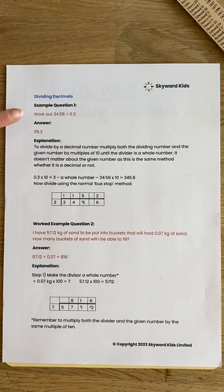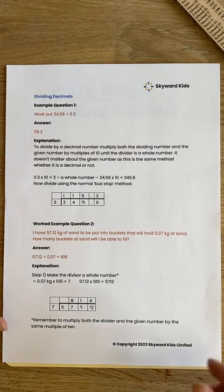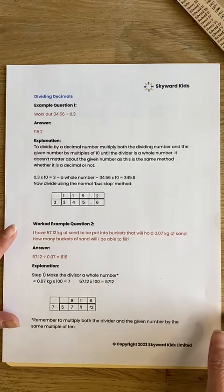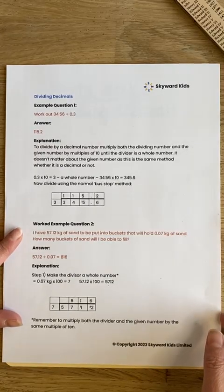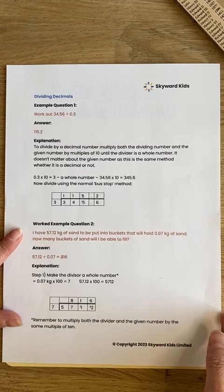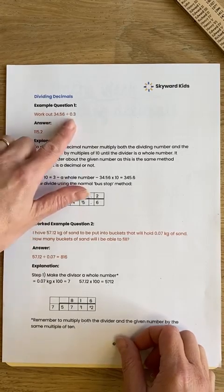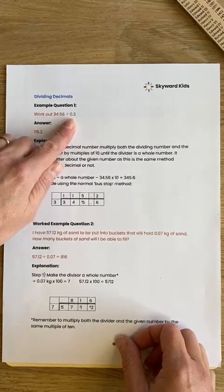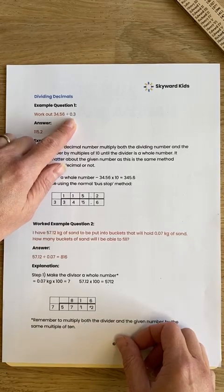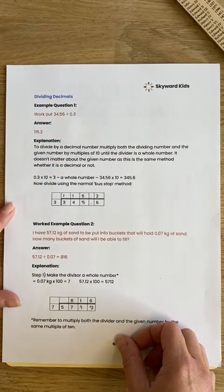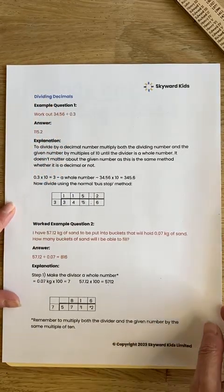It says, work out 34.56 divided by 0.3. We're going to use the bus stop method that we've covered in a previous video, but first of all, we have a slight problem because we have a decimal that we're dividing by. To solve that, we can multiply it by 10.